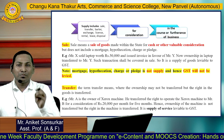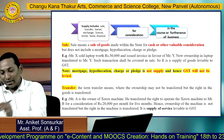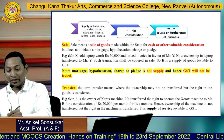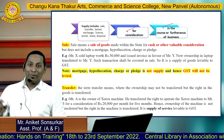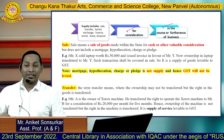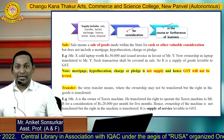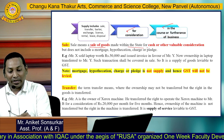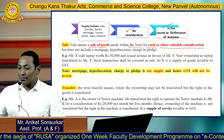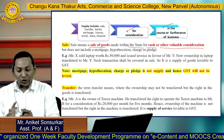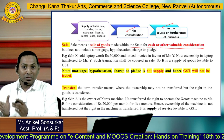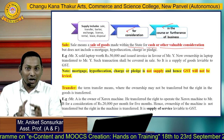Supply includes sale, transfer, barter, exchange, license, rental, lease, or disposal, made with consideration and in the course of furtherance of business. To give an example: sale means a sale of goods made for cash or other valuable consideration. For instance, if Mr. X sold a laptop worth rupees 50,000 and issued an invoice in favour of Mr. Y, the ownership of that laptop is transferred from Mr. X to Mr. Y — such a transaction is called a sale.